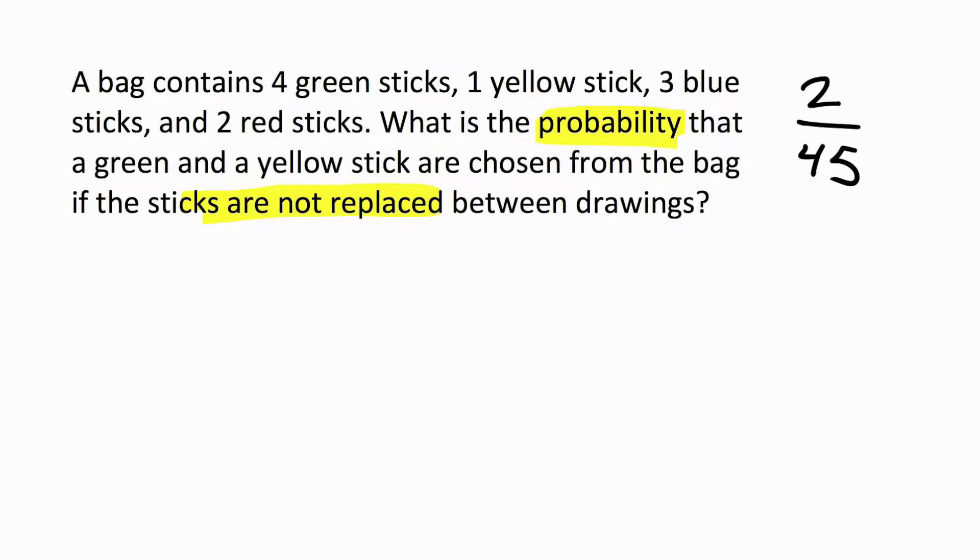All right, that's also important because you may have set up the problem like this. So it wants a green stick, that's 4 out of 10, and it wants a yellow stick, that's 1 out of 10. You may have done this, multiplied. This equals 4 out of 100 or 1 out of 25. But that's not our answer. So what went wrong? Well, this is the wrong setup.